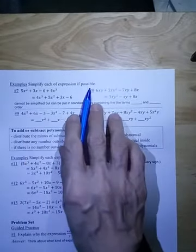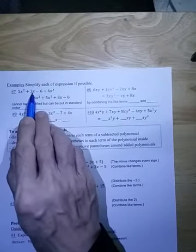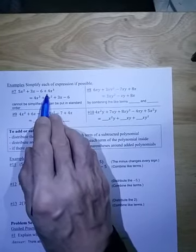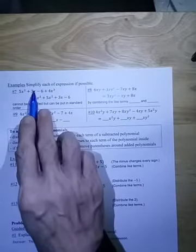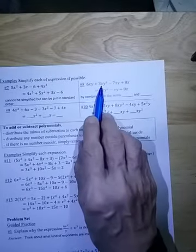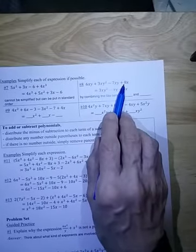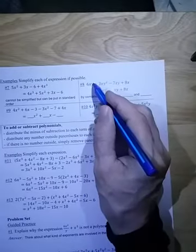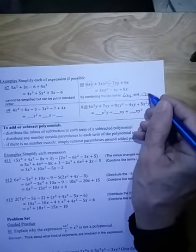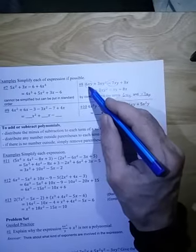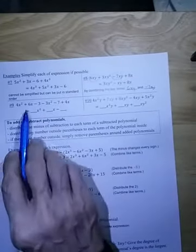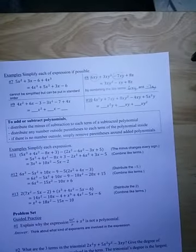Now simplify each expression if possible. This first one has terms of degree 2, 1, 0, and 3 — there are no like terms to combine, but you do put them in standard order: the cubed term first, then squared, then the first-degree term, then the constant. For the next one — 6xy, 3xy², −7xy, and 8x — the like terms are 6xy and −7xy. Combining those gives the simplified expression.